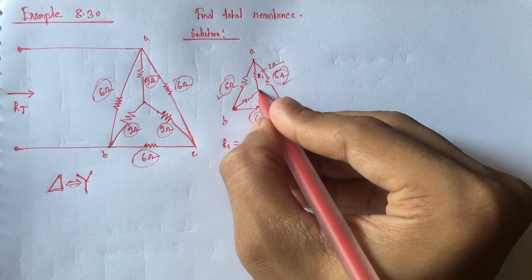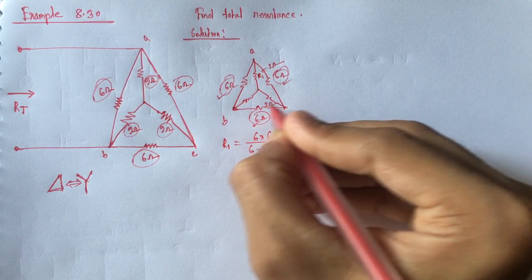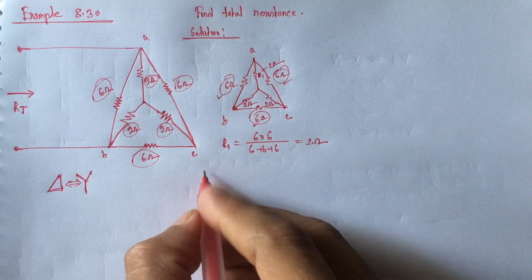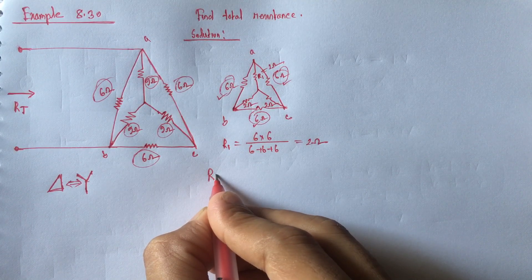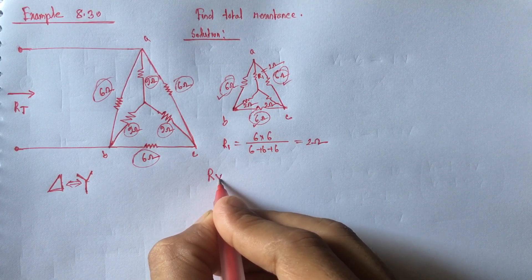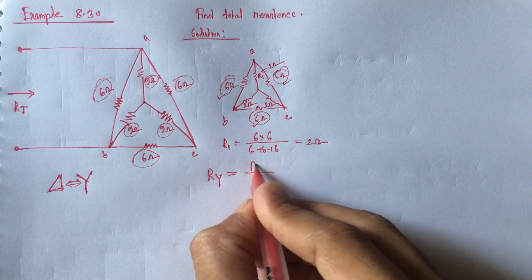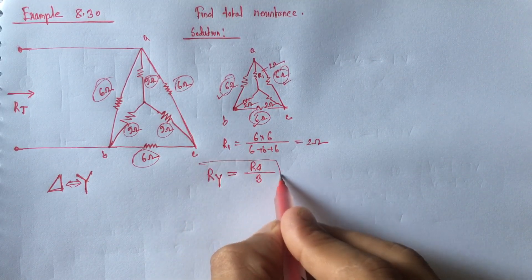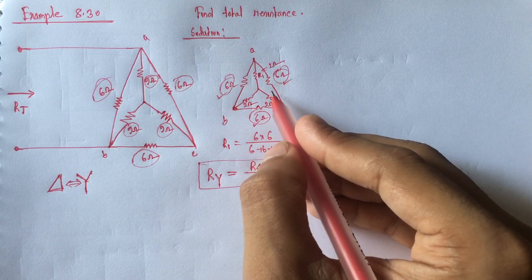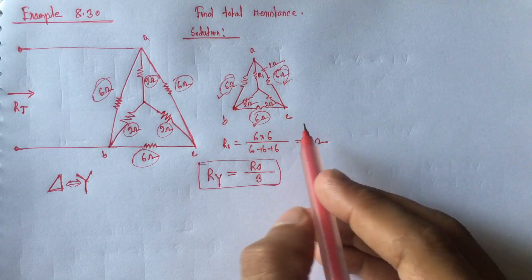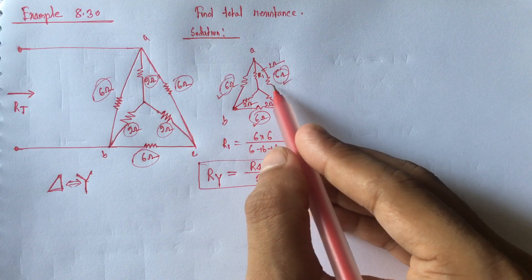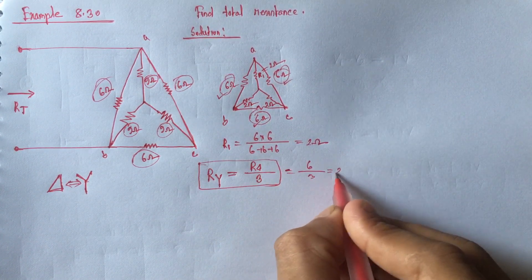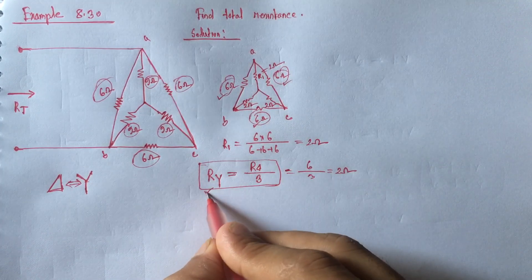Since all three delta resistances are equal at 6 ohm, all Y resistances will also be equal to 2 ohm. This can also be calculated simply as R_Y equals R_delta divided by 3. This formula is applicable only when all three resistances are equal. Here R_delta is 6, so 6 divided by 3 gives 2 ohm. All Y resistances are 2 ohm.